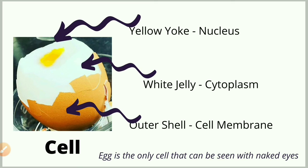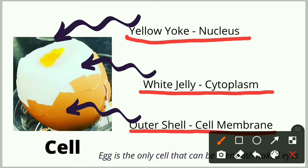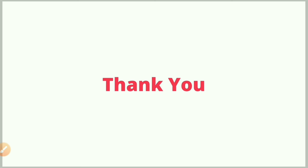There is only one cell we can see with the naked eye — an egg. An egg is a cell, not an organism. There are three important parts in a cell: the outer shell, which is called the cell membrane; the white jelly-like part inside, called the cytoplasm; and the yellow yolk at the center, called the nucleus. So next time you eat an egg, remember — you are eating a cell! This is the end of the video, thank you.